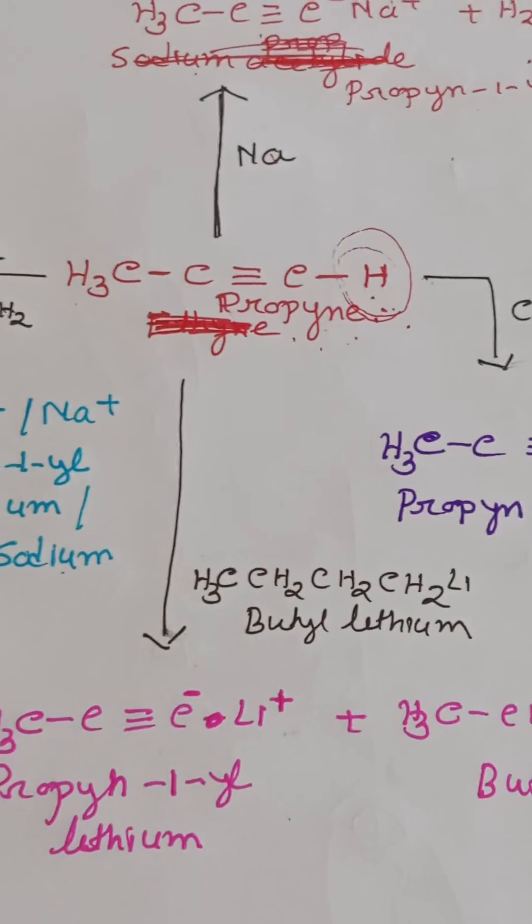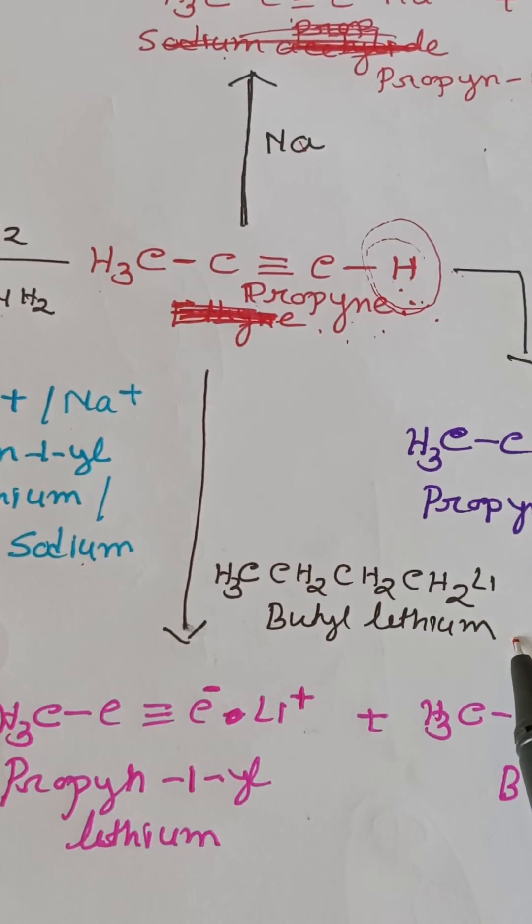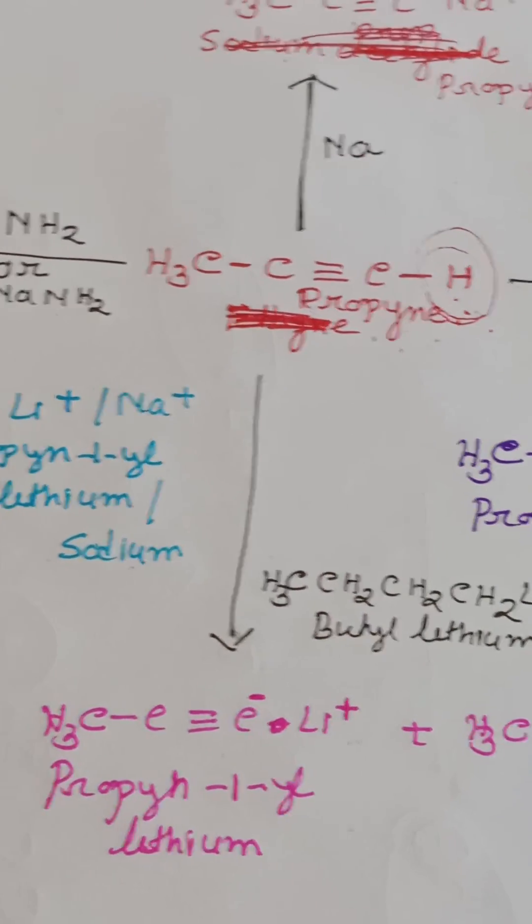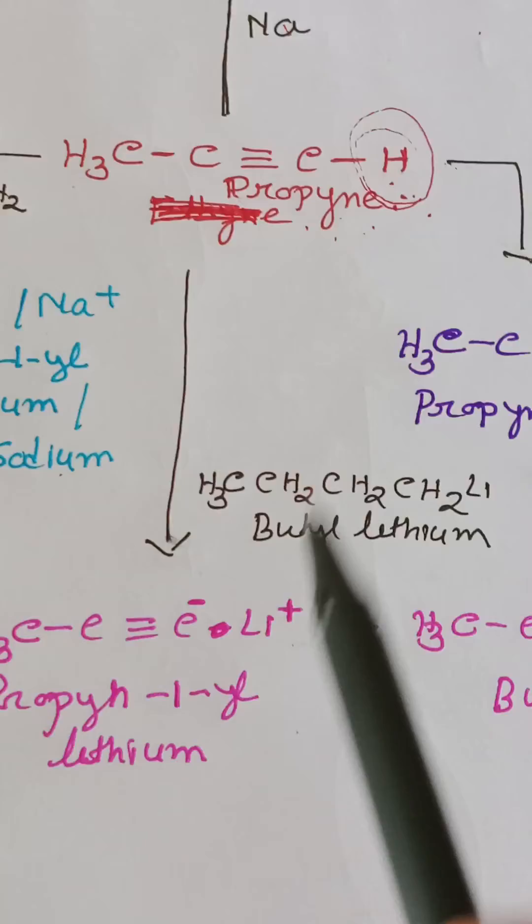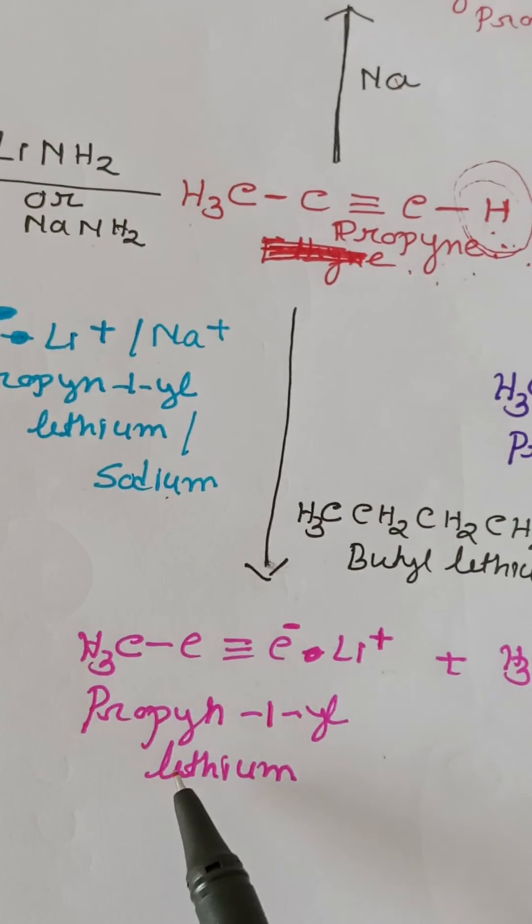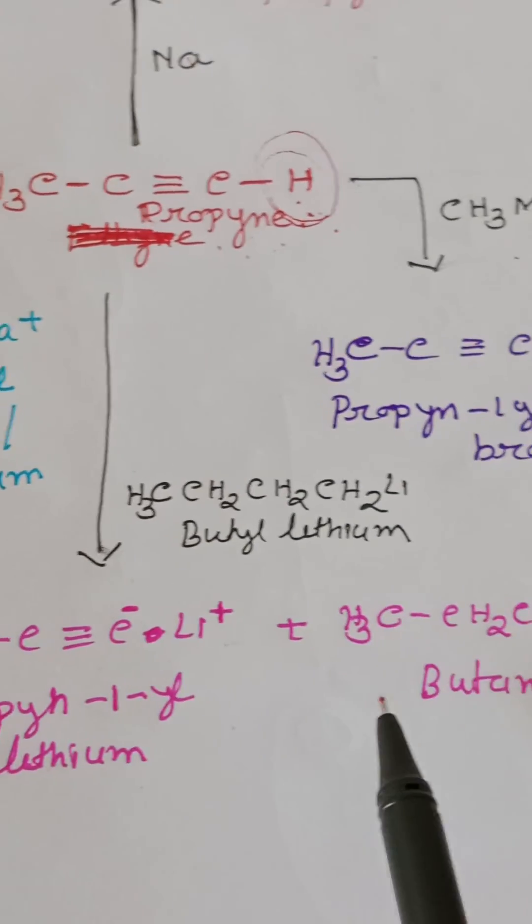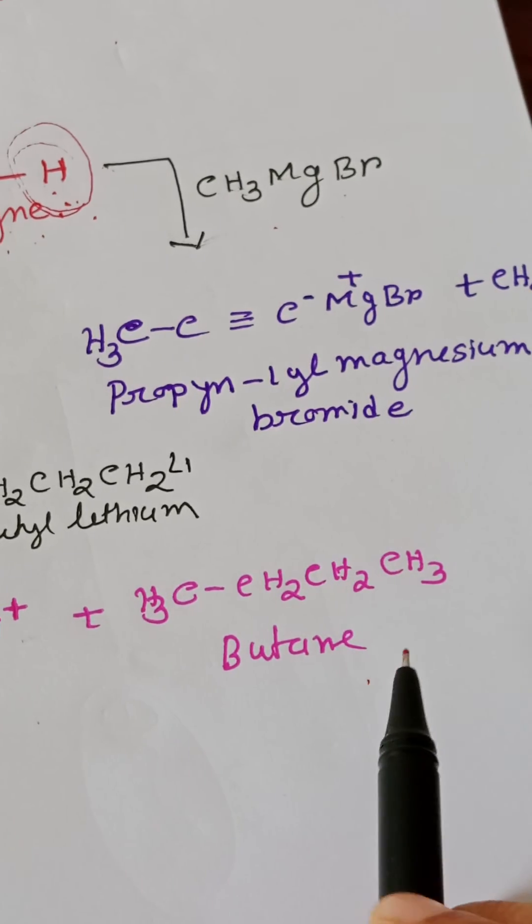Now the last reaction is reacting with butyl lithium which is also a very strong organic base. This hydrogen gets replaced with lithium. We get propyne vinyl lithium and butane as a byproduct.